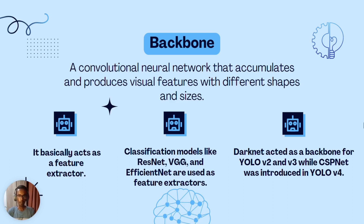A backbone is basically a term used in YOLO literature to describe a convolutional neural network that accumulates and produces visual features with different shapes and sizes. A backbone is basically a feature extractor, and any deep neural network can act as a backbone. Classification models like ResNet, VGG, and EfficientNet are used as feature extractors. DarkNet acts as a backbone for YOLO v2 and YOLO v3, and CSPNet was introduced as a backbone in YOLO v4.